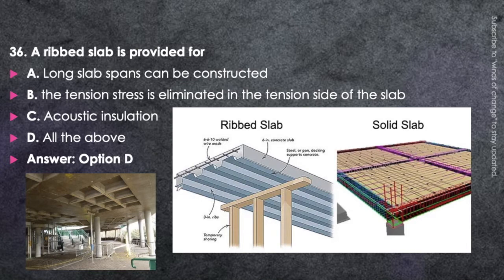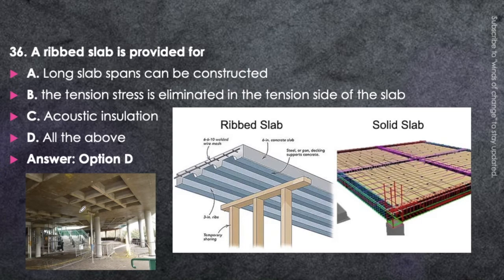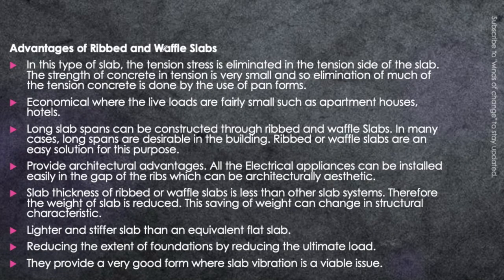These are ribbed slabs — you may have seen them in many buildings. They allow long slab spans to be constructed, reduce the bottom tensile stress significantly, and provide acoustic insulation, which is why they are sometimes used in libraries. The difference between a solid slab and a ribbed slab is visible at the bottom; the top looks similar, but the ceiling below shows the ribbed pattern, providing architectural ease as well. It is also called a waffle slab.